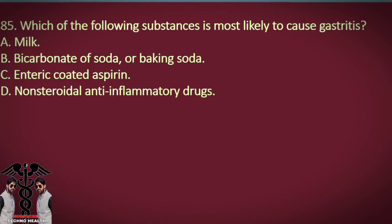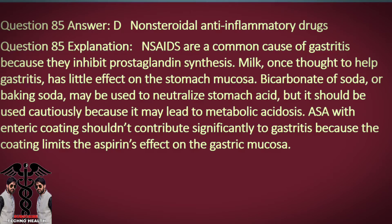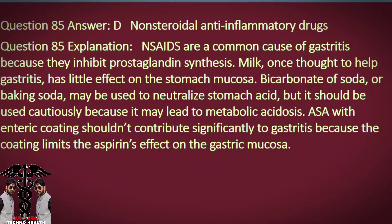Question 85. Which of the following substances is most likely to cause gastritis? A. Milk. B. Bicarbonate of soda, or baking soda. C. Enteric-coated aspirin. D. Non-steroidal anti-inflammatory drugs. Answer: D. Non-steroidal anti-inflammatory drugs. Explanation: NSAIDs are a common cause of gastritis because they inhibit prostaglandin synthesis. Milk, once thought to help gastritis, has little effect on the stomach mucosa. Bicarbonate of soda, or baking soda, may be used to neutralize stomach acid, but it should be used cautiously because it may lead to metabolic alkalosis. Enteric-coated aspirin shouldn't contribute significantly to gastritis because the coating limits the aspirin's effect on the gastric mucosa.